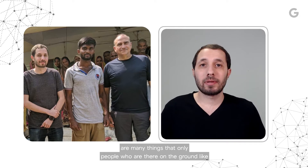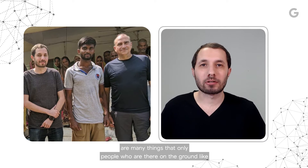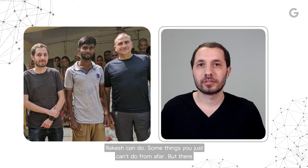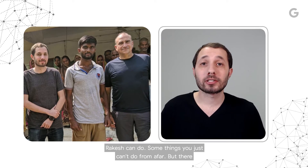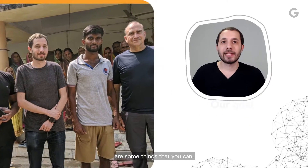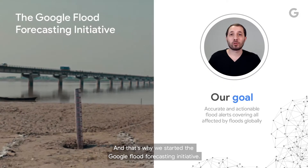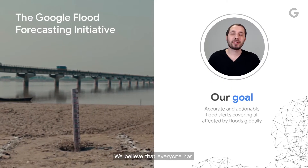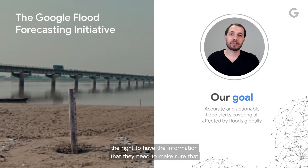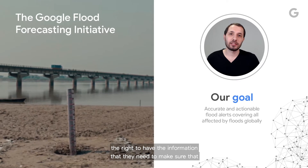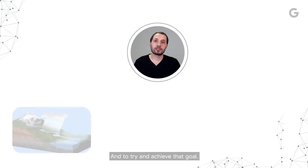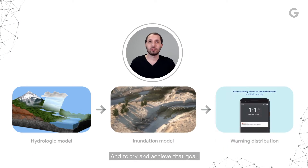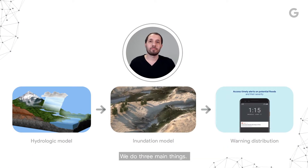Now, there are many things that only people who are there on the ground, like Rakesh, can do. Some things you just can't do from afar. But there are some things that you can. And that's why we started the Google Flood Forecasting Initiative. We believe that everyone has the right to have the information they need to make sure that they and their loved ones are safe at times of flooding. And to try and achieve that goal, we do three main things.